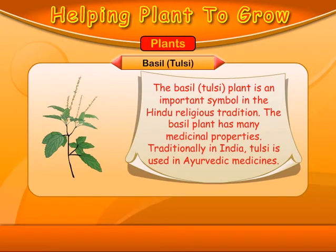Basil, also known as Tulsi, is an important symbol in the Hindu religious tradition. The basil plant has many medicinal properties. Traditionally in India, Tulsi is used in Ayurvedic medicines.